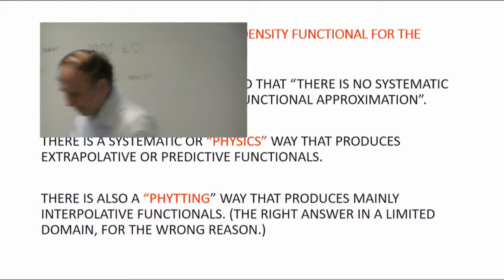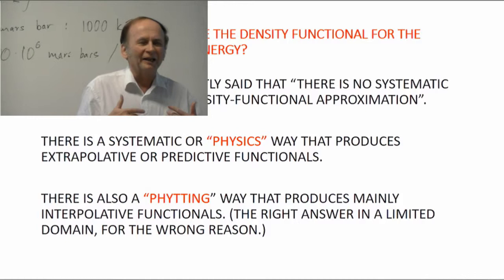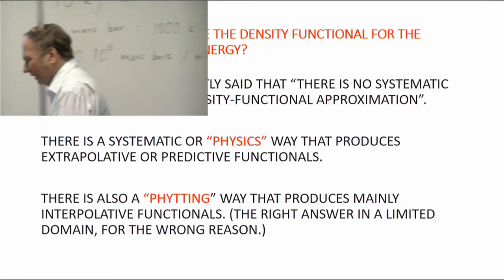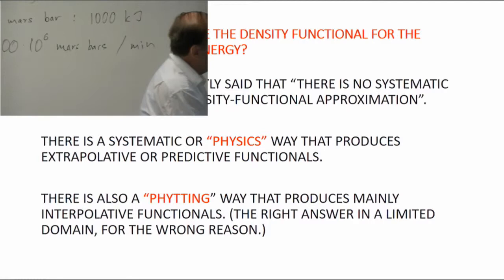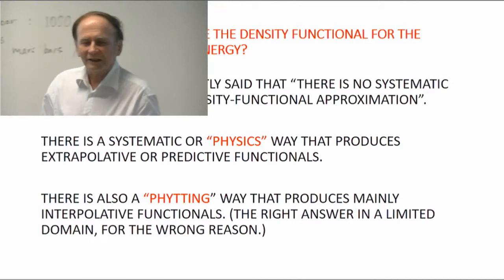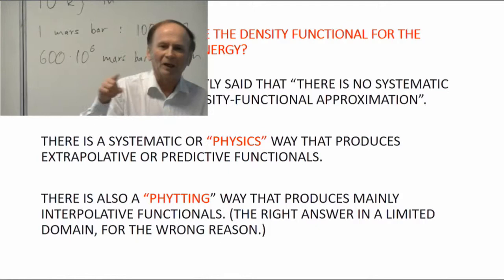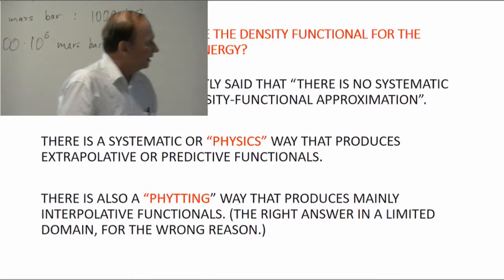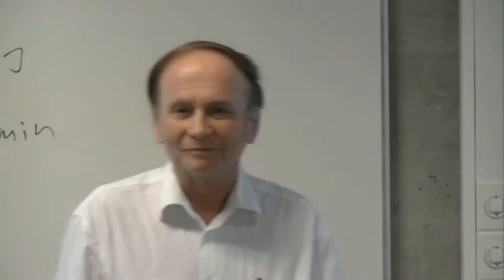I call the more systematic approach the physics way, which produces predictive or extrapolative functionals. There's also a competing way — I call it the fitting way, spelled with PHY because there is some physics behind it. One introduces parameters fitted to experiment. If you choose your form carefully and have just a few parameters, you can build a good functional. But if you have a very flexible form and use 40 parameters or something, you'll produce what I call an interpolative functional — one that interpolates within the data set to which it was fitted, and can be very accurate for similar systems but not beyond.